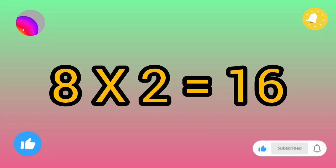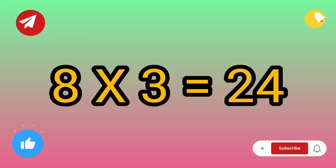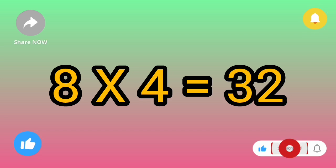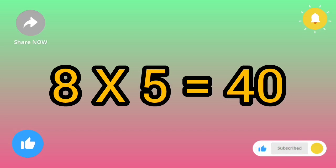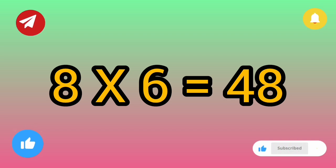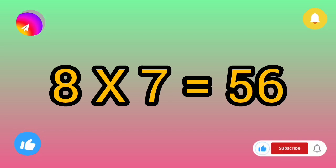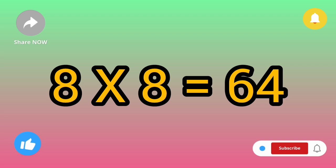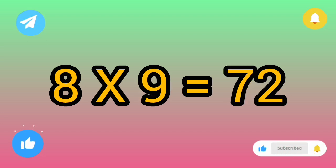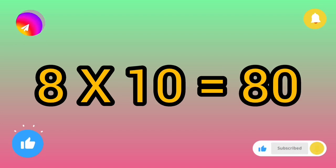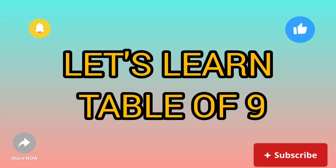Eight ones are eight, eight twos are sixteen, eight threes are twenty-four, eight fours are thirty-two, eight fives are forty, eight sixes are forty-eight, eight sevens are fifty-six, eight eights are sixty-four, eight nines are seventy-two, eight tens are eighty. Let's learn table of nine.